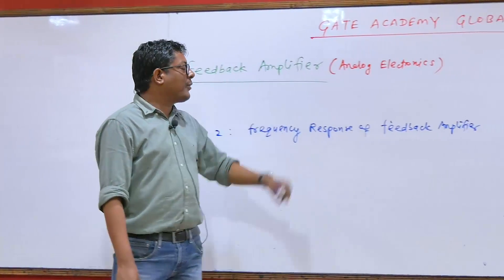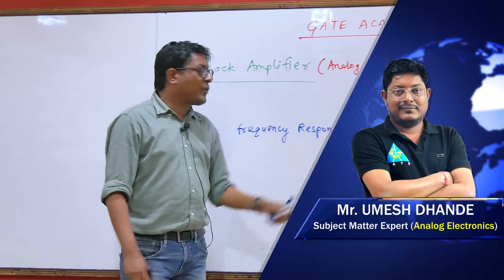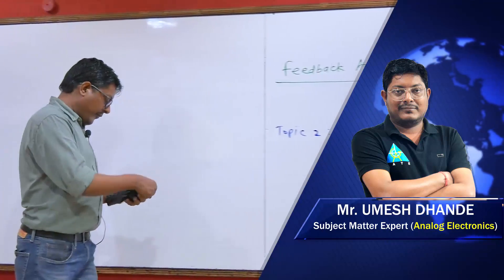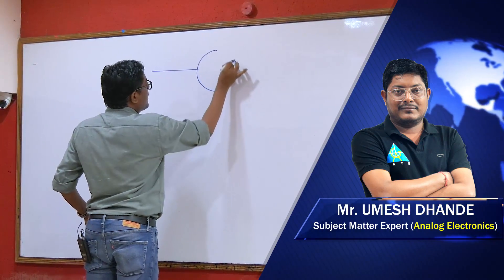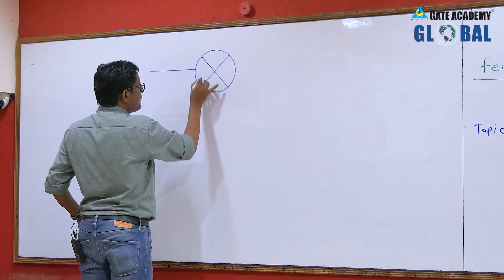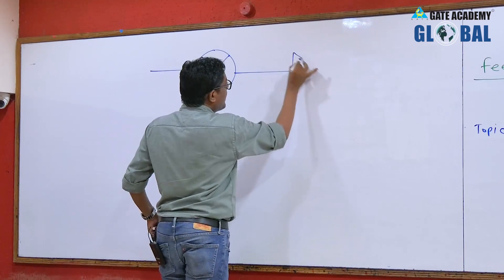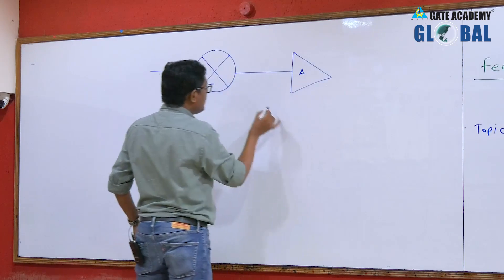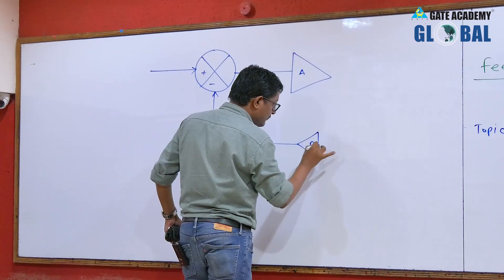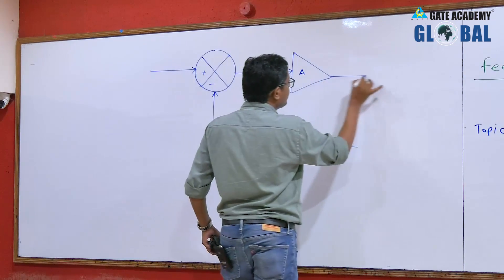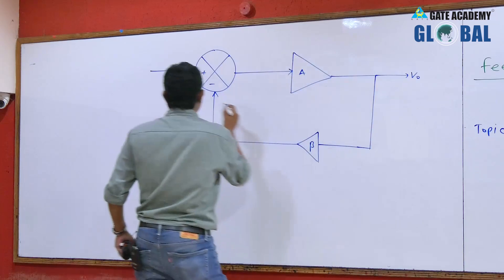Hello everyone, welcome to Gate Academy Global. Today we will discuss our next topic: frequency response of feedback amplifier. Please note down the basic structure of a feedback amplifier. By default negative feedback system, this is the basic amplifier A, the feedback path gain is beta. The output is V naught and input is Vs.